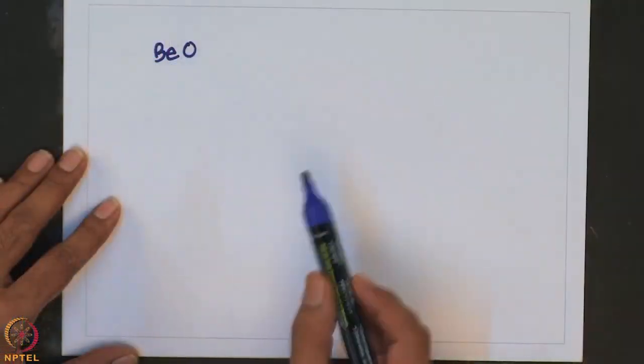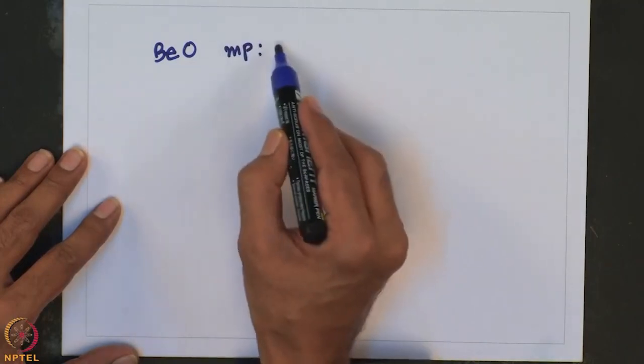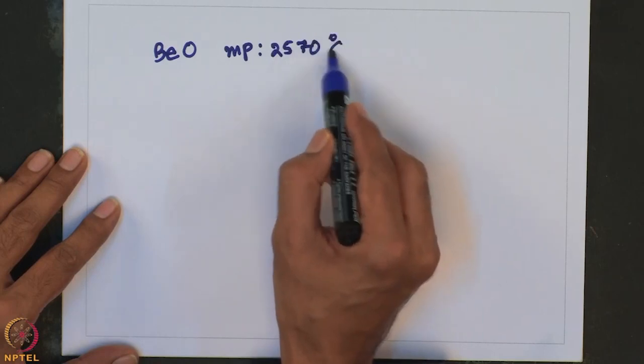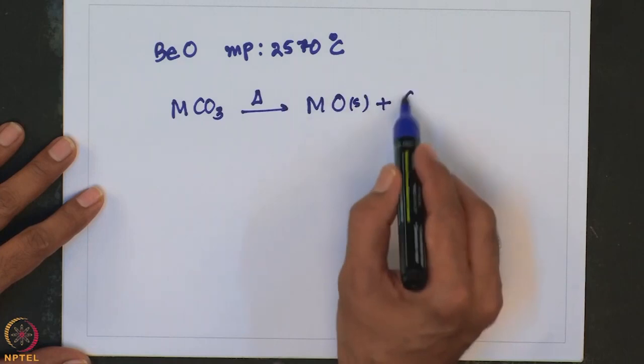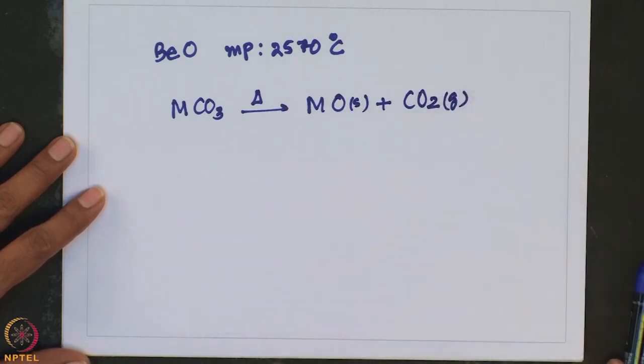Beryllium oxide is obtained by ignition of the metal in oxygen. It is a white insoluble solid with a melting point of 2570 degrees centigrade. The oxides of other group 2 elements can be obtained by direct combination of elements, but they are more commonly obtained by decomposition of the carbonates — on heating, carbonates give the corresponding oxides along with liberation of CO2 gas.